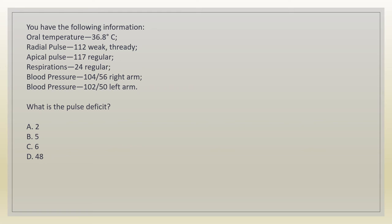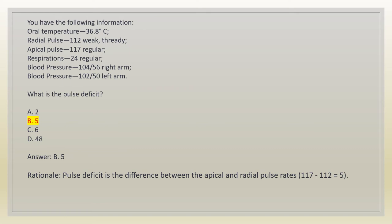You have the following information: oral temperature 36.8°C, radial pulse 112 weak and ready, apical pulse 117 regular, respirations 24 regular, blood pressure 104/56 right arm, blood pressure 100/50 left arm. What is the pulse deficit? A. 2. B. 5. C. 6. D. 48. Answer: B. 5. Rationale: pulse deficit is the difference between the apical and radial pulse rates. 117 minus 112 equals 5.